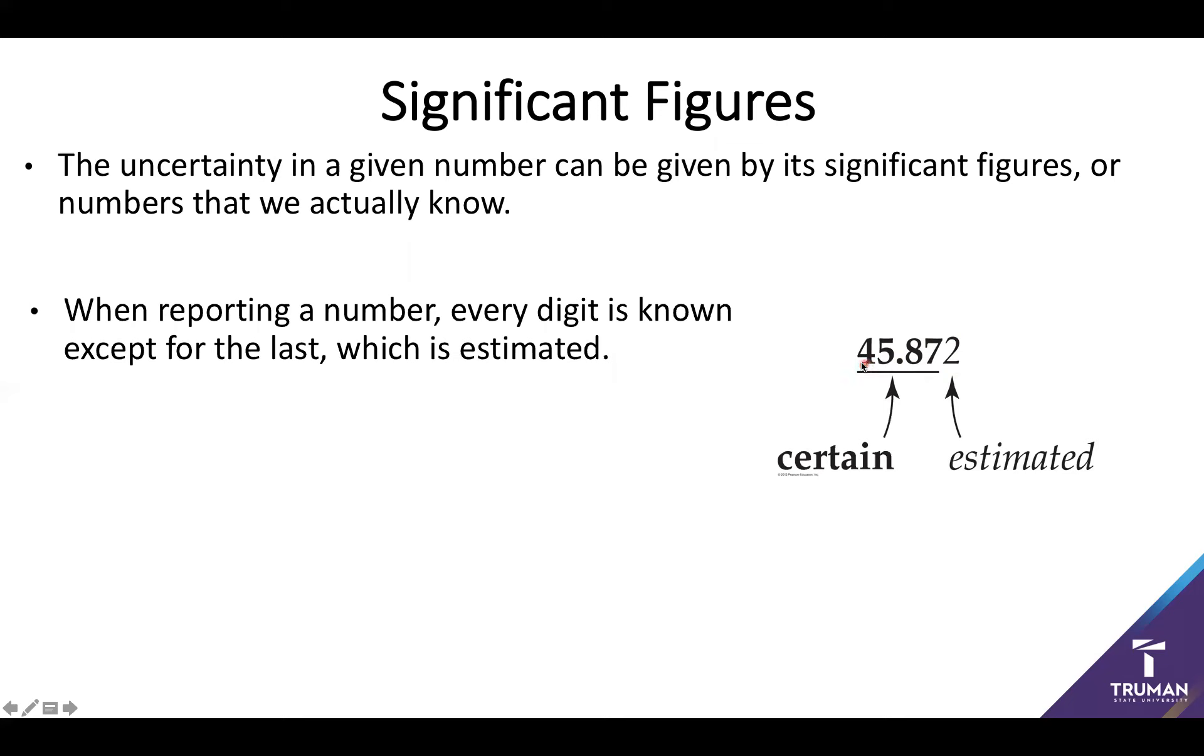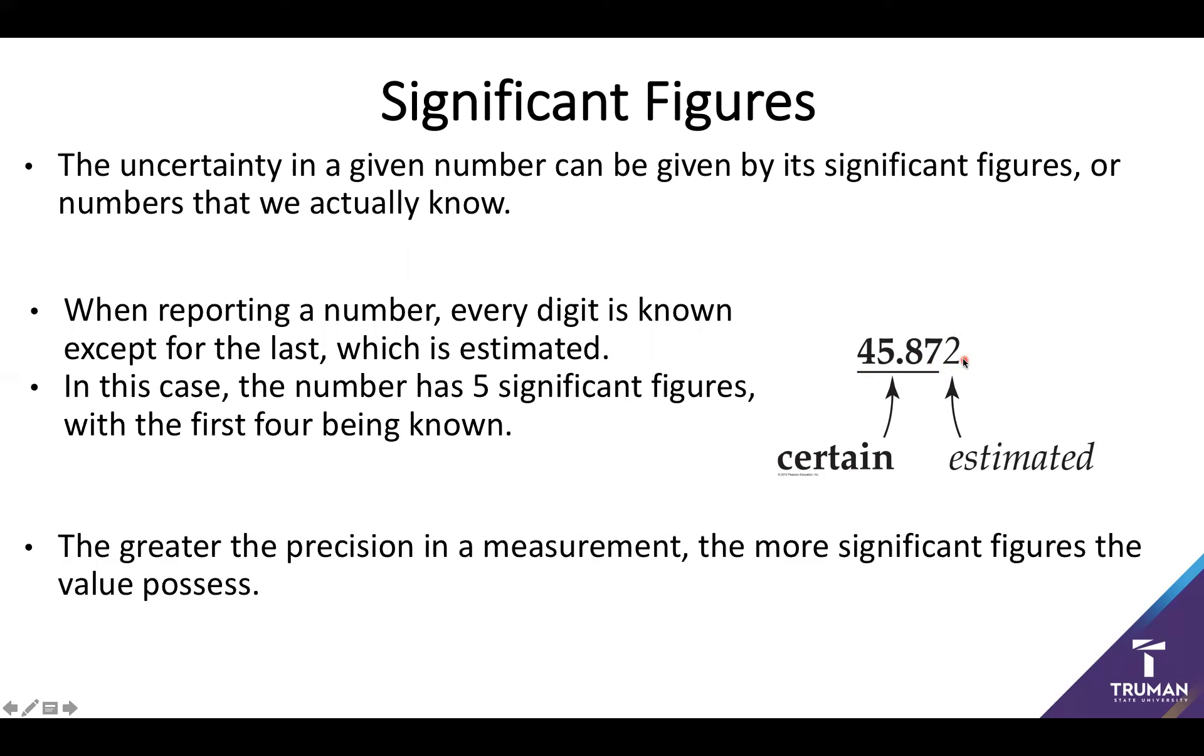So again, in the ruler, we know everything up to say the hundreds, and we do an estimated hundreds. So whenever I have a number reported, our significant figures are going to be all of the digits that are known, and the last one that is estimated. So in this case, we have five significant figures. We include that last estimated number. So we know four, we estimate the fifth. And in general, the greater the precision in a measurement, the more significant figures we're going to tend to possess.